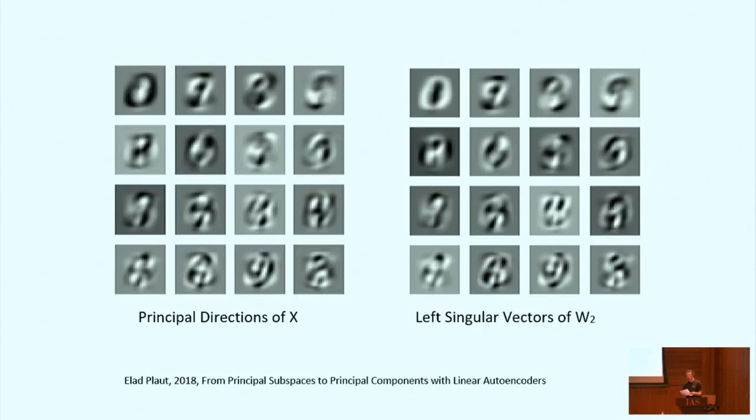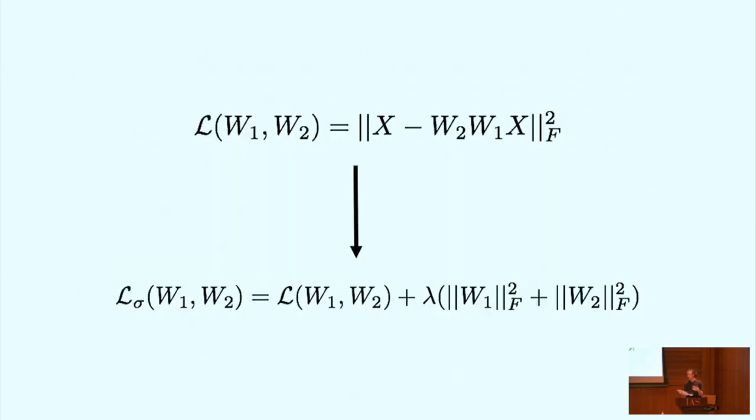So given this, we were surprised when we found a 2018 preprint that demonstrated empirically it actually was possible to recover the principal directions of X through the SVD of the weights of a trained linear autoencoder. Since the SVD is not invariant under the general linear group, how could this be possible? And we hypothesized that this could only be true theoretically if we explicitly added L2 regularization to the encoder and decoder separately. Notice that this loss is now not invariant under the general linear group, but is under the orthogonal group. And conveniently under the orthogonal group, the SVD structure is preserved.